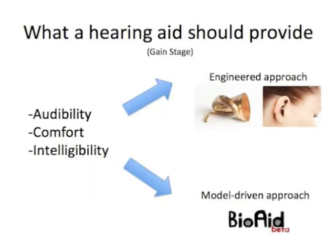I've written in brackets 'at the gain stage', because that's what this talk is really focused on. Modern hearing aids provide all kinds of processing functionality in terms of microphone arrays, beamforming, and noise reduction techniques, but I'm going to focus in on the gain stage. What it needs to do is provide audibility of sounds that would otherwise be inaudible to a hearing-impaired listener. Hearing-impaired listeners generally have a raised threshold of hearing, so they need some kind of gain boost. However, normal and impaired listeners tend to have a similar maximum level at which they can tolerate sounds.